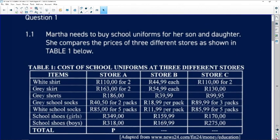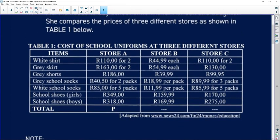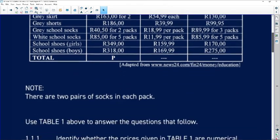Question one of the November 2022 paper is out of 30 marks and it's all finance. Question one says that Martha needs to buy school uniforms for her son and daughter. She compares the prices of three different stores as shown in TABLE 1 below. We can see the cost of school uniforms at three different stores: Store A, Store B, and Store C with different uniform items listed. I always advise that you need to first go through whatever is given before you jump to your questions.